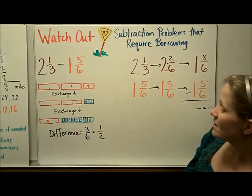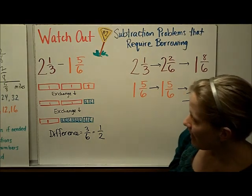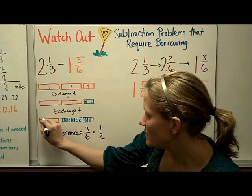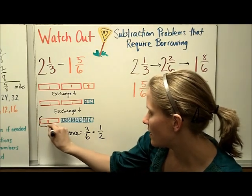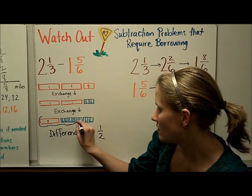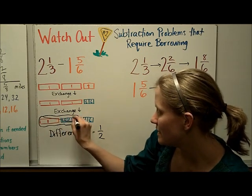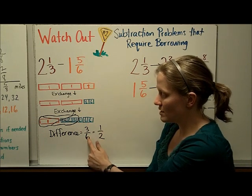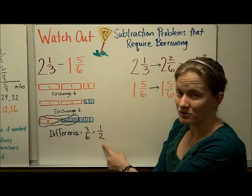And then I can find the difference. I can pull out 1 and 5/6. So let's find that. This would be 1, and then I can go over here and get 5/6. 1, 2, 3, 4, 5. I'm going to pretend that I'm taking out that much. And then I'm left with 1, 2, 3 sixths, which simplifies to 1/2.